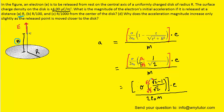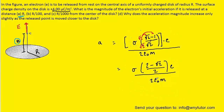Distributing radical 2 to both terms: radical 2 times radical 2 becomes 2, and radical 2 times minus 1 becomes minus radical 2. Finally, this 2 can also be pushed down to the denominator, and when we multiply, the coefficient becomes 4.